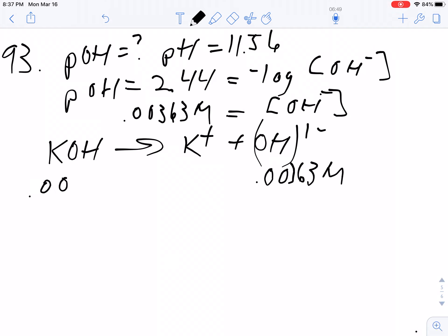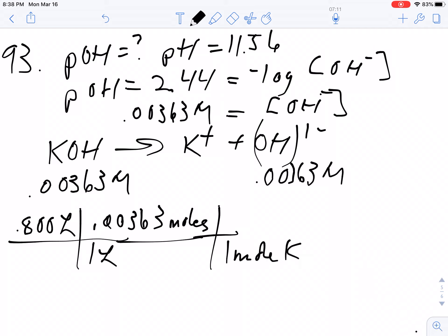That's the molarity of hydroxide, so because it's a strong base, my potassium hydroxide would have the same concentration. Now it's just stoichiometry. I've got 800 milliliters or 0.8 liters. In one liter there are this many moles. One mole of potassium hydroxide weighs 39 + 1 + 16, that's 56 grams. So I multiply 0.8 times 0.00363 times 56, which gives me 0.163 grams of potassium hydroxide.